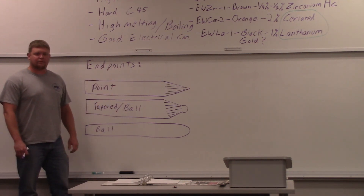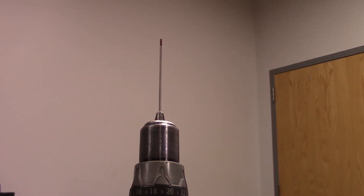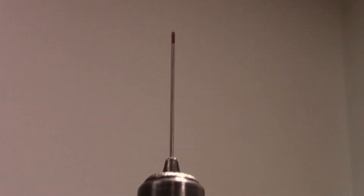Here we have a 3/32" diameter two percent thoriated tungsten stuck in a drill so you can see it. That little red band on the end is the color designation — that's all it is. On this one we put a point, so let's take a look at the point. This is the point end on the 3/32" two percent thoriated tungsten — good job on the grind, though it could be more even toward the base. Now let's take a look at the tapered ball — this is 1/8" pure tungsten, which we typically use for aluminum.